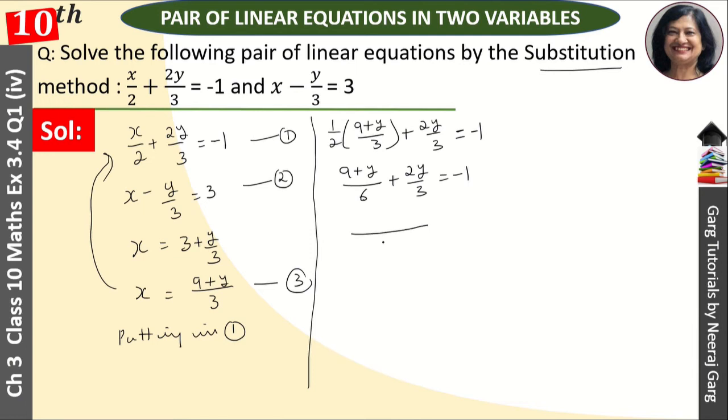Taking LCM of 6, we get 9 + y + 4y, which equals 9 + 5y = -1. Multiplying to clear the denominator, 9 + 5y = -6. Then 5y = -6 - 9.